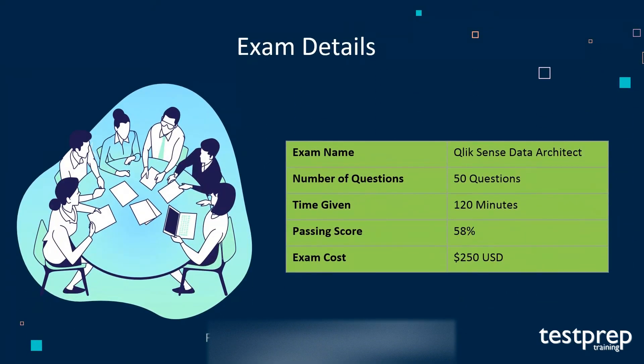Exam details: the name of the exam is Qlik Sense Data Architect Certification. Number of questions: 50. Time limit: 120 minutes. Passing score: 58 percent. Exam cost: 250 US dollars.